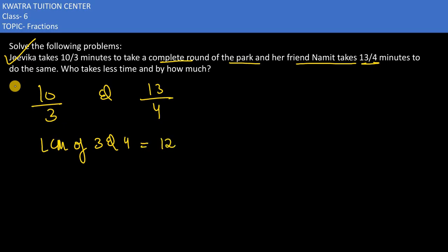12 would be there. Now we need to multiply 4, we need to multiply it with 3, so you would have 40 over 12. Second value would be 39 over 12. And in this it is saying who takes less time.